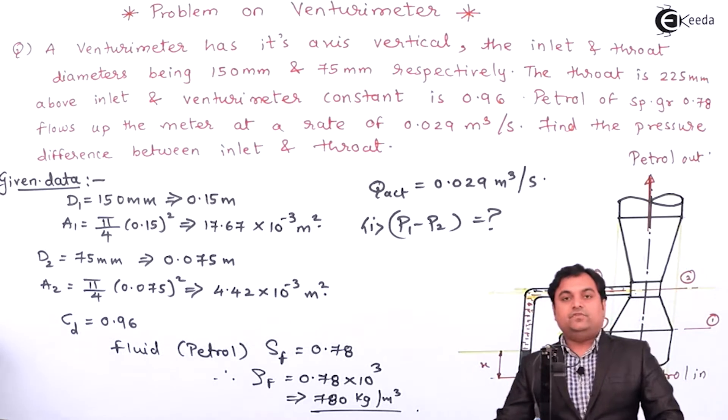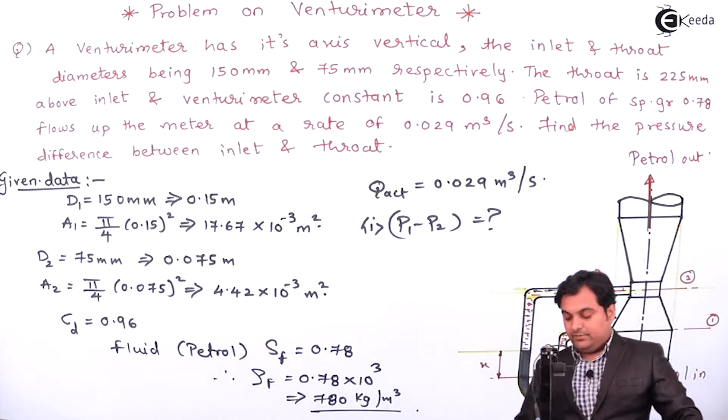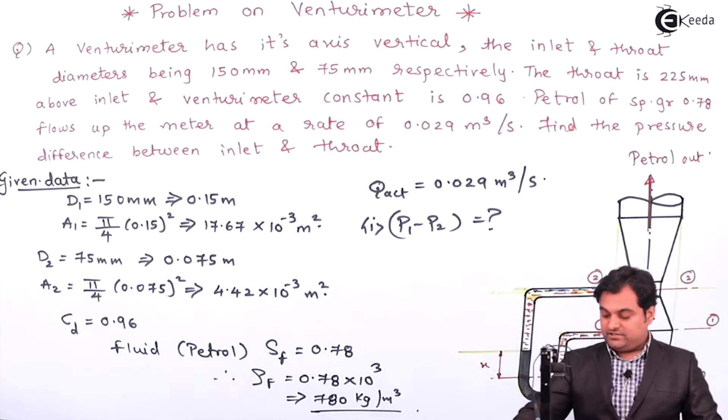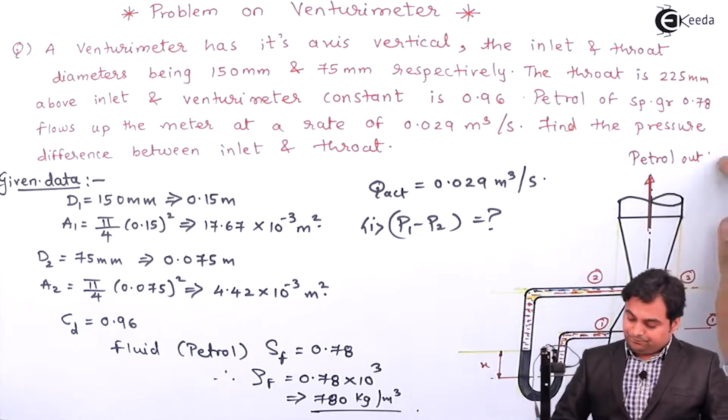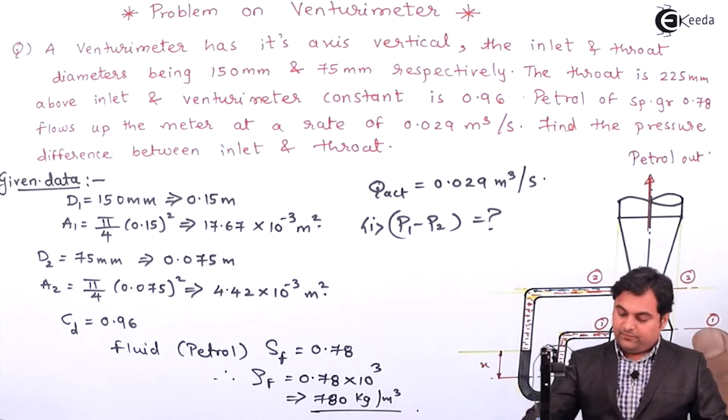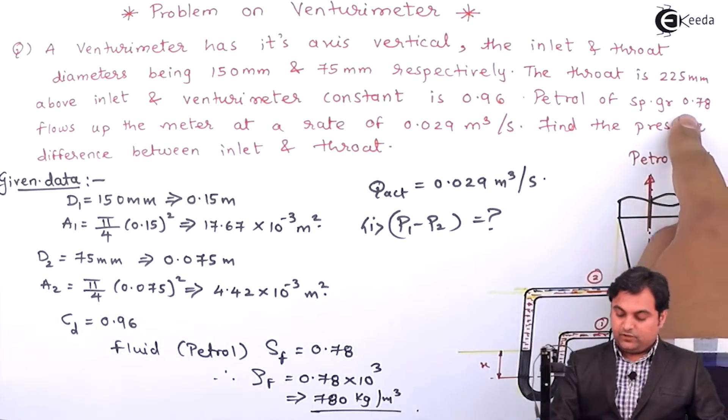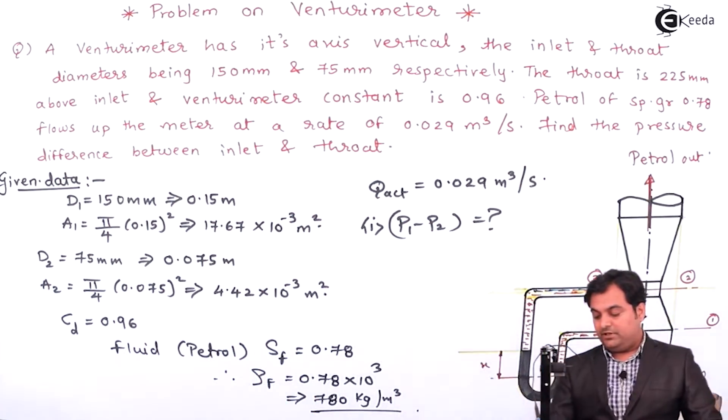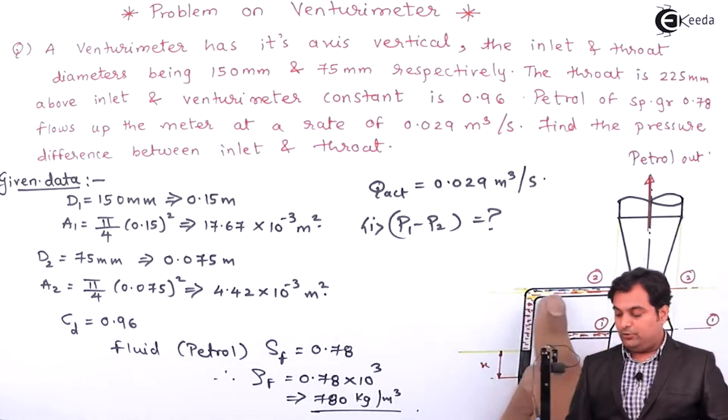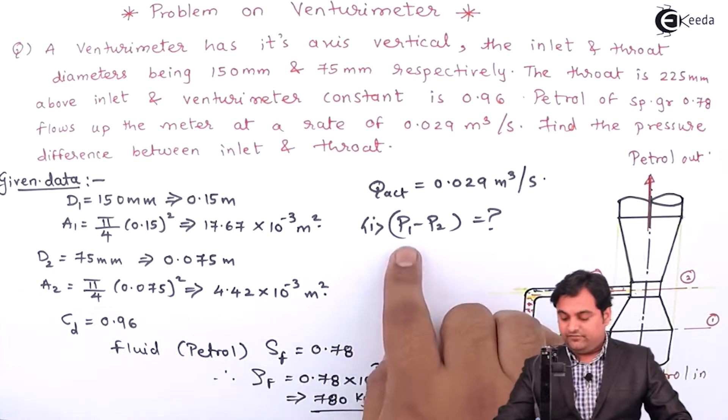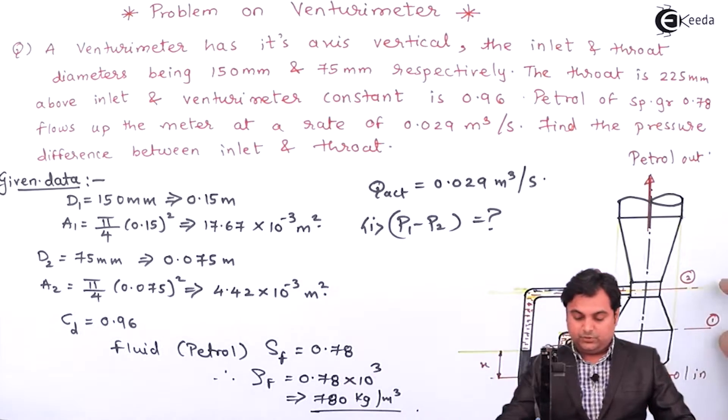This is the vertical axis of the venturimeter and inside that the petrol is flowing in upward direction. Here there is inlet of petrol and this is the exit. It is a vertical venturimeter and we have to find out P1 minus P2, that is the difference in pressure at section 1 and section 2.